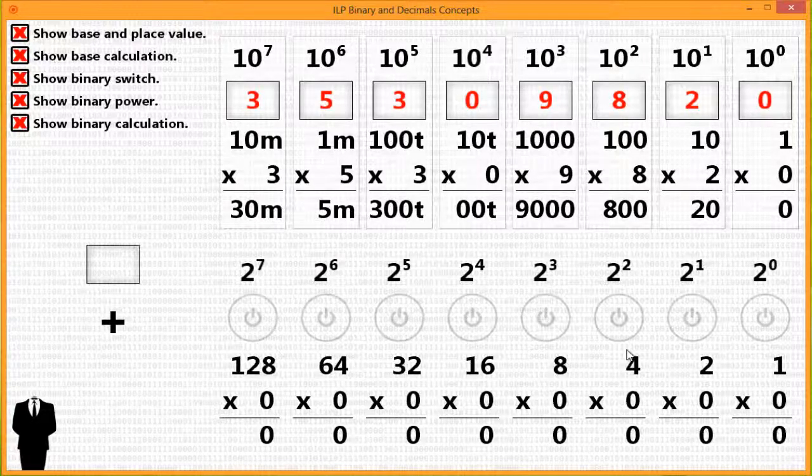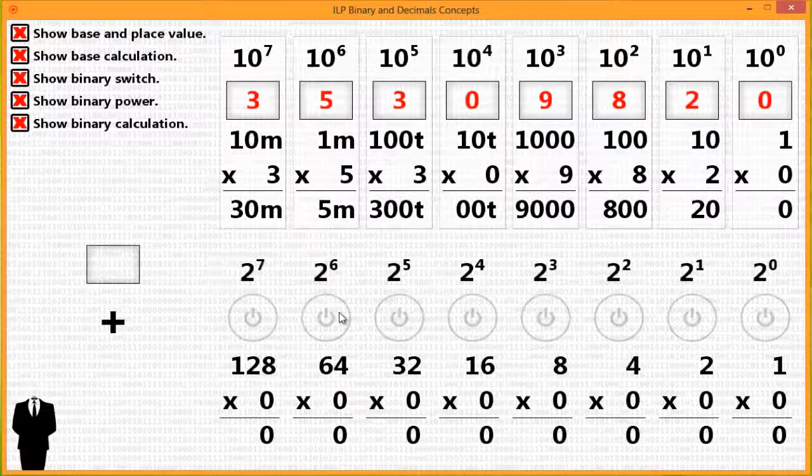When you go to the next place value after that, you times 2. So 2 times 2 is 4. Each time you move in a binary system, it doubles.